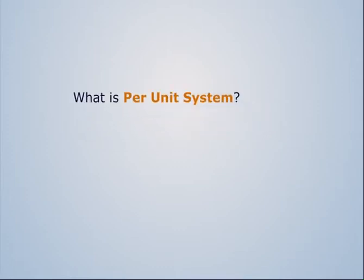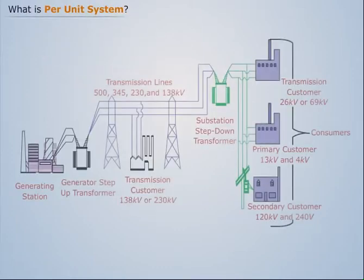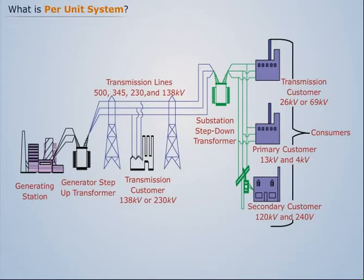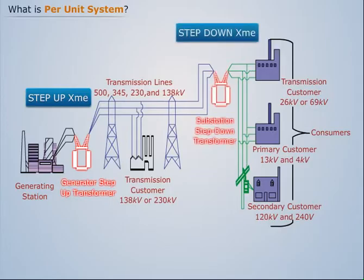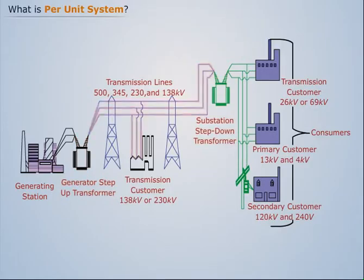What is per unit system? In a power system, different power equipments with different voltage and power levels are connected together through various step-up or step-down transformers. However, the presence of various voltage and power levels causes problems.